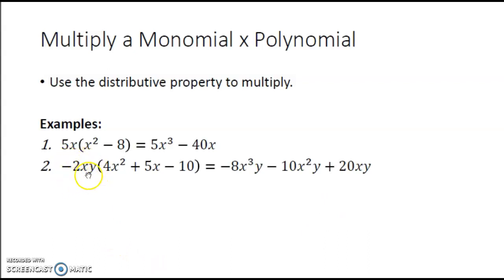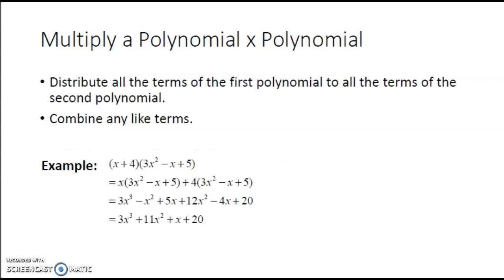Notice that when you have a negative coefficient, it changes all of the signs in the polynomial. Now that we have looked at multiplying a monomial times any polynomial, we can talk about how to multiply any polynomial times any other polynomial. In this example, we are going to look at multiplying a binomial times a trinomial, but the idea can work no matter what size polynomials you have. The main idea is to use the distributive property — distributing all of the terms of the first polynomial to all of the terms of the second polynomial.